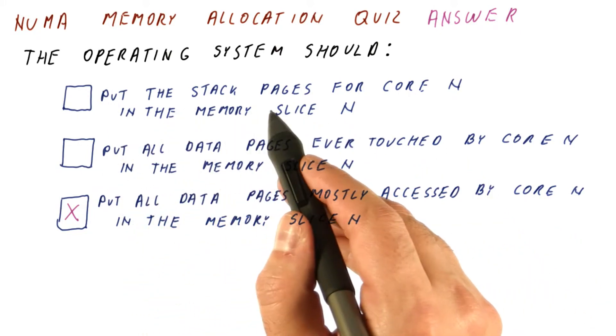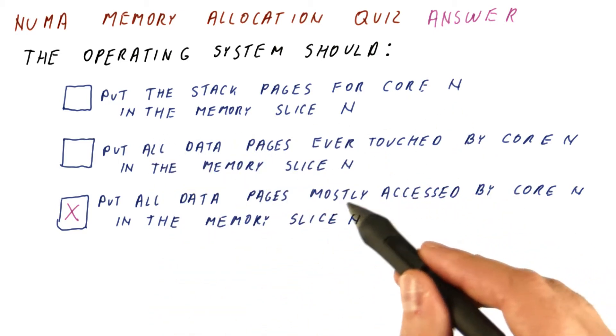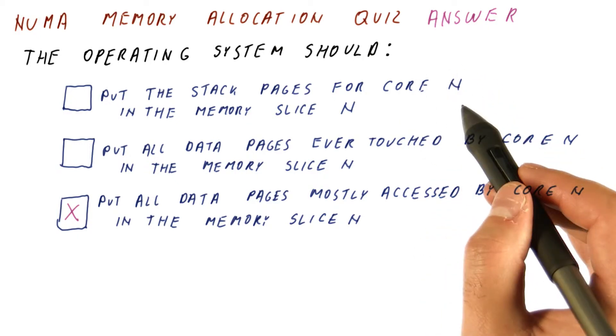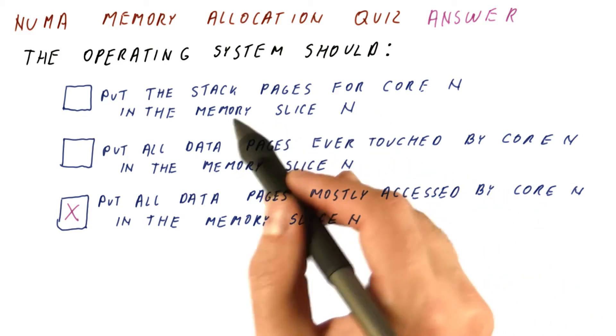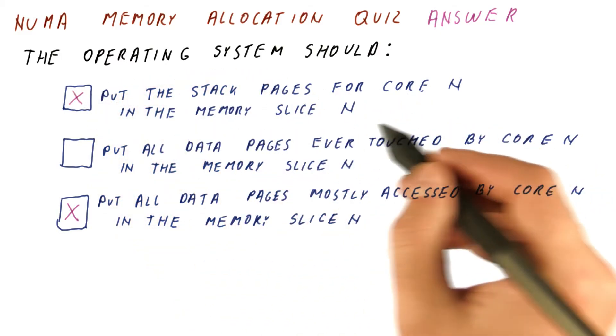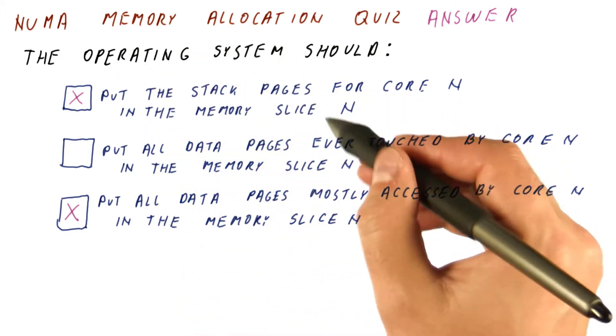And then putting the stack pages for core N in the memory slice N is a very extreme example of this, where really it will just be core N that is ever accessing this data, so of course it should be in its memory slice.